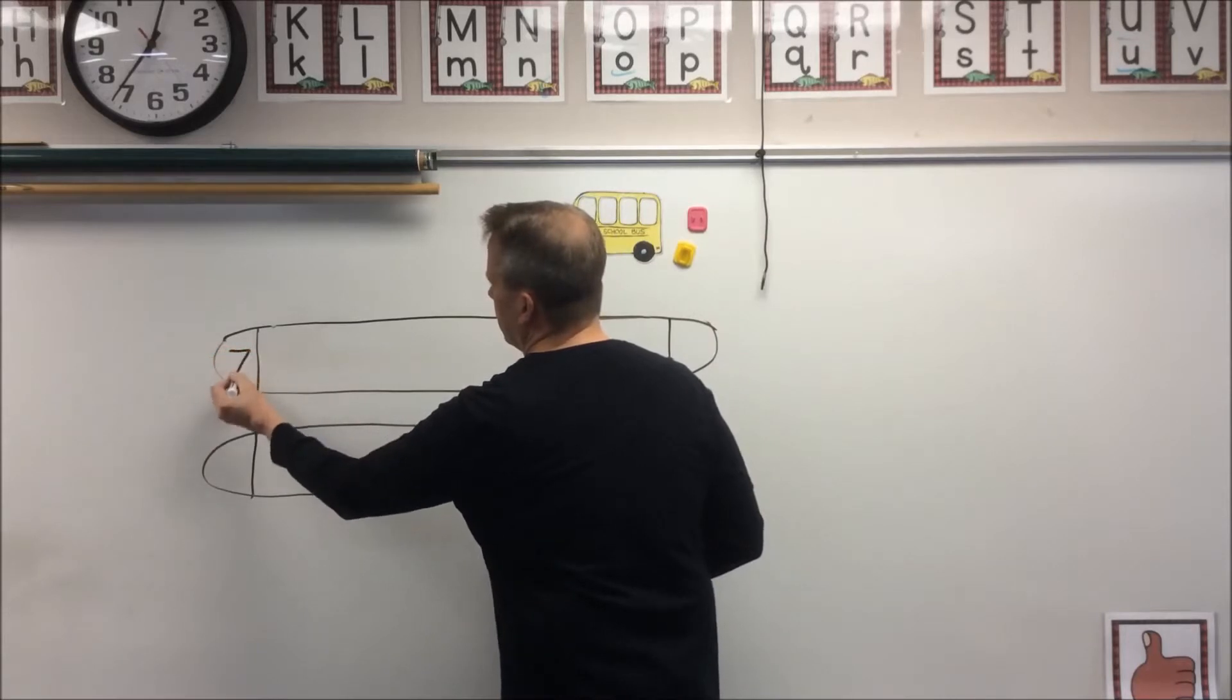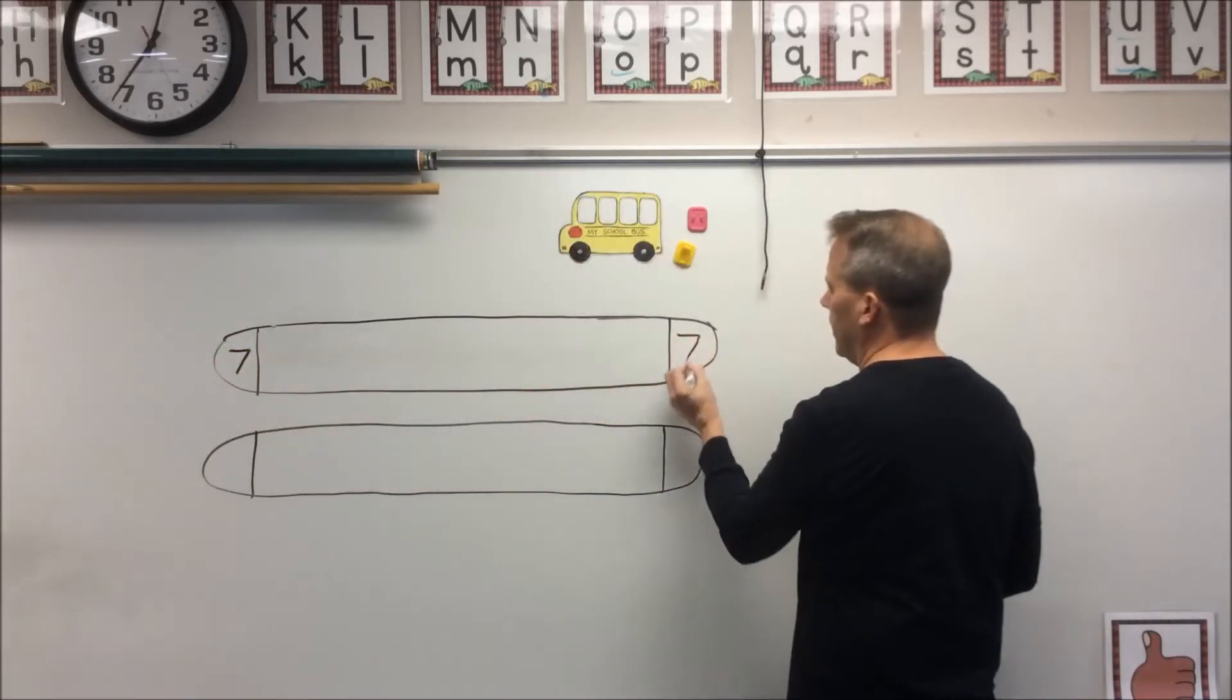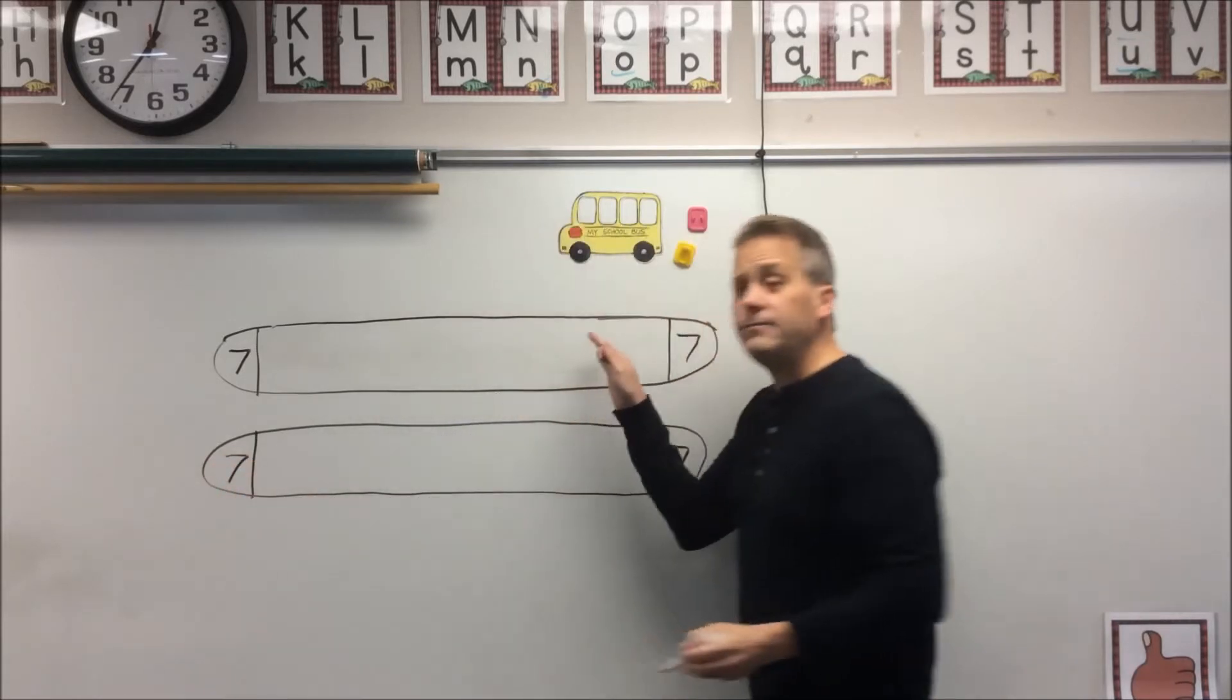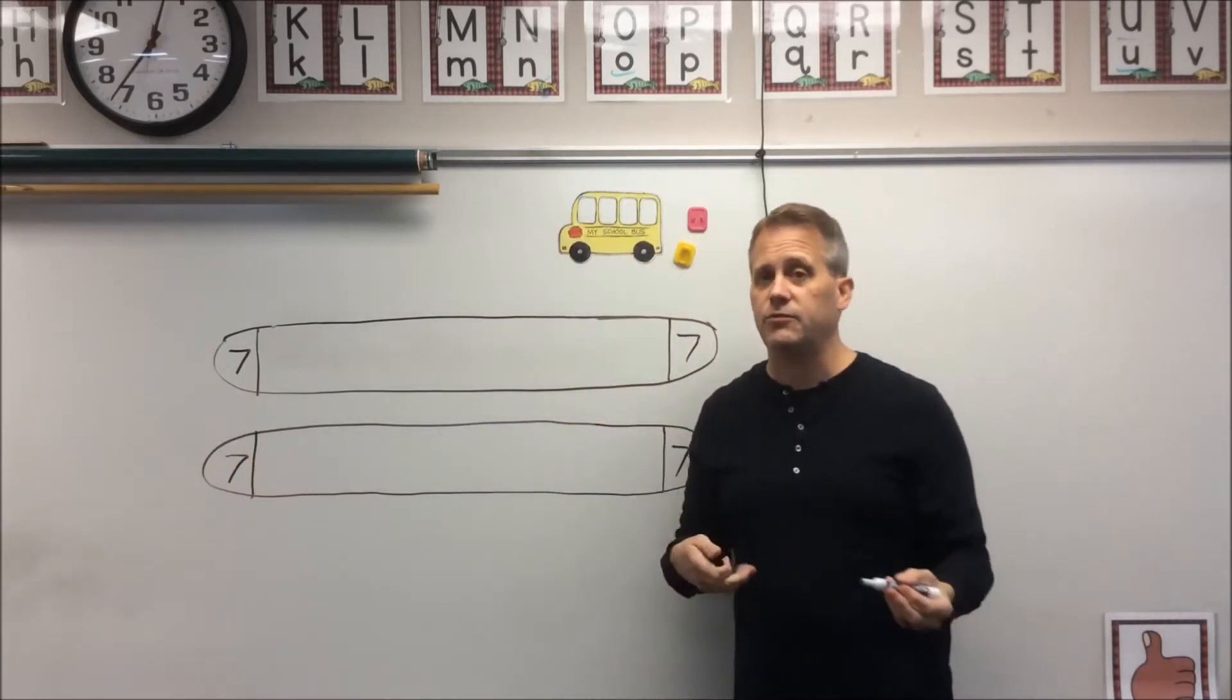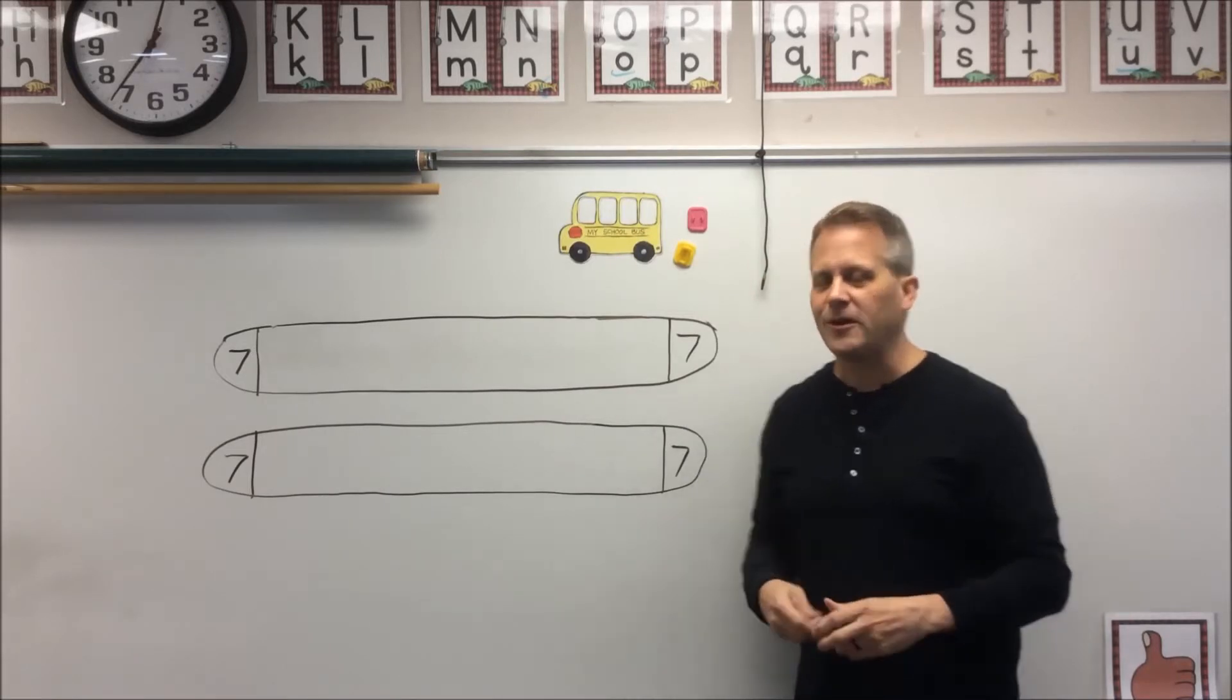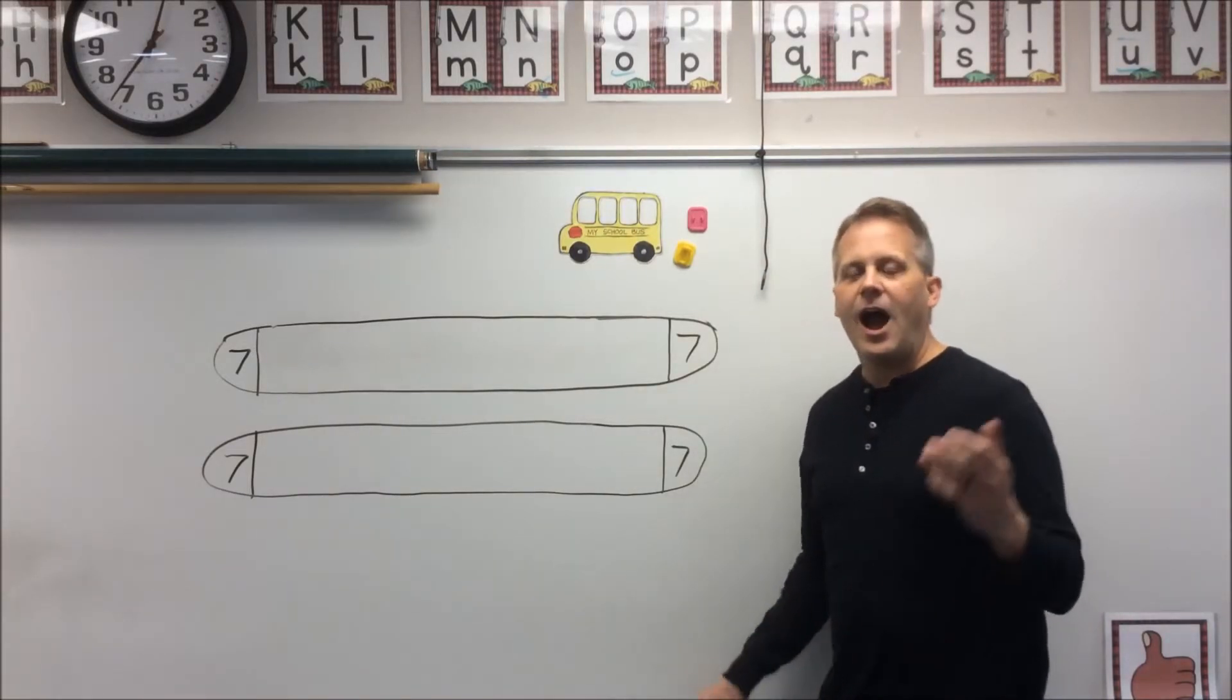I'm going to put seven just right here on either end of the popsicle sticks. Now one of the popsicle sticks will be used for multiplication facts and the other one will be used for division facts.